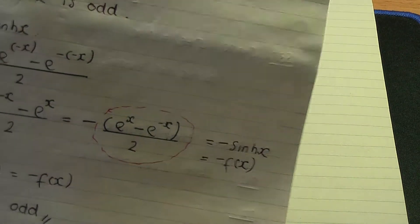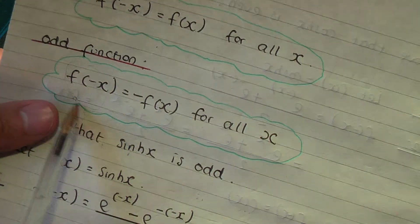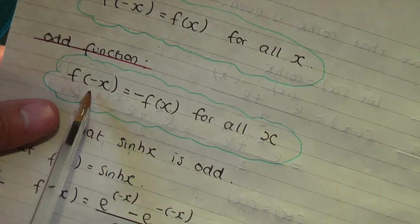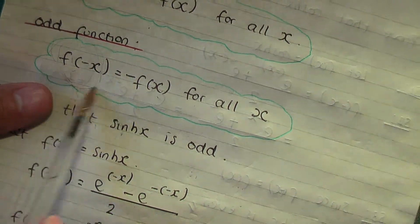In step number two, remember for odd functions, start with the left-hand side. So start with f(-x), and we need to prove and try to get -f(x).